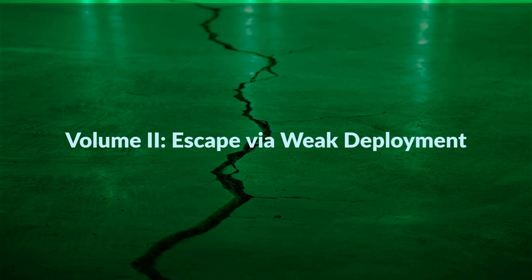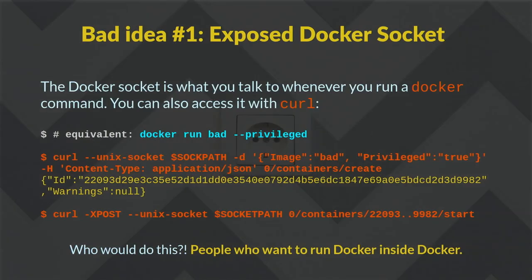We're going to move on to volume two: Escape via Weakness in Deployment, where we'll summarize each approach as a bad idea. The first bad idea is the Docker socket. The Docker socket or containerd socket is a Unix socket used to manage the container engine. Whenever you run a Docker command, you're running a Docker client talking over this socket to the Docker daemon. It just speaks HTTP — but you really should not expose this because any jerk can just curl against it or run Docker pointed at it to schedule privileged containers with host mounts and fully take over the system.